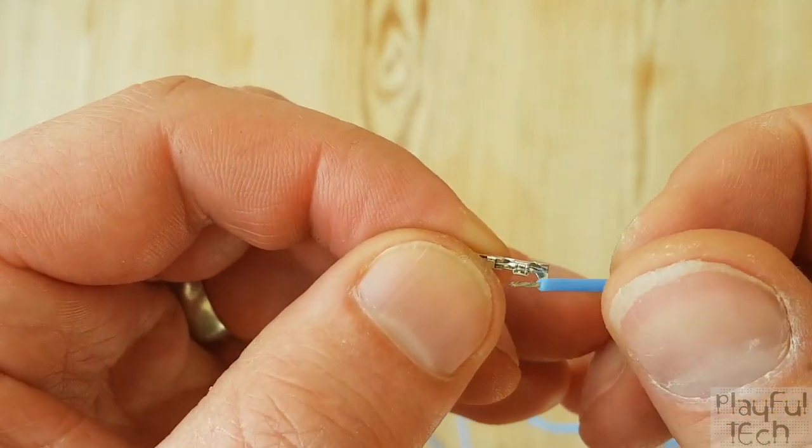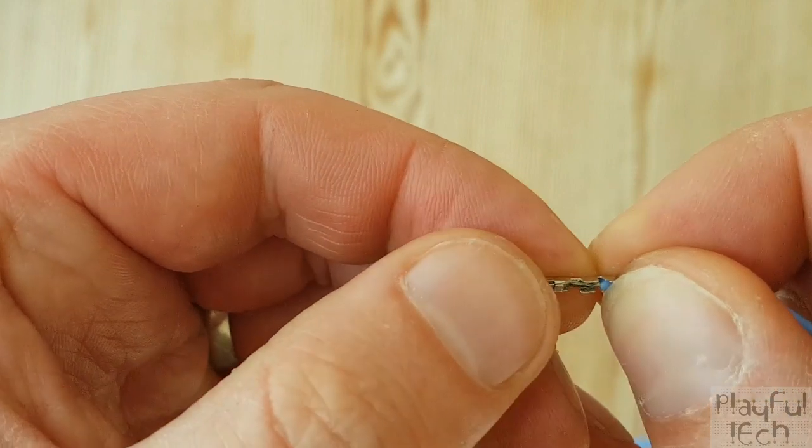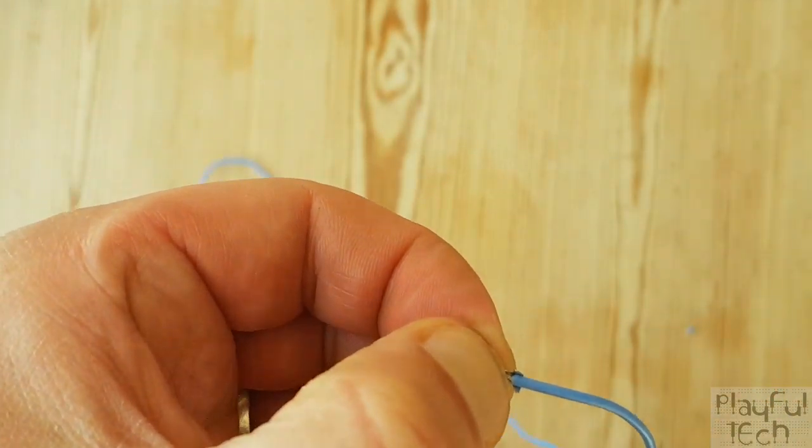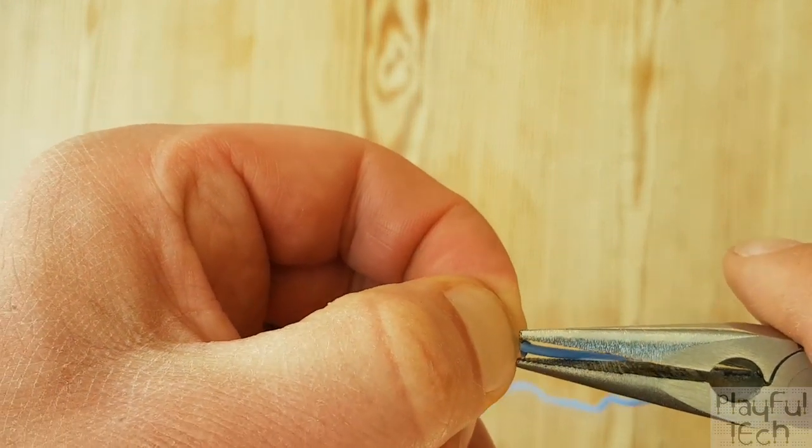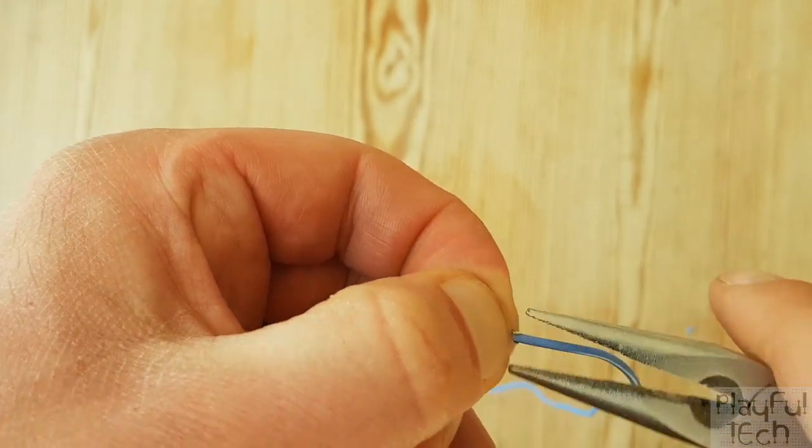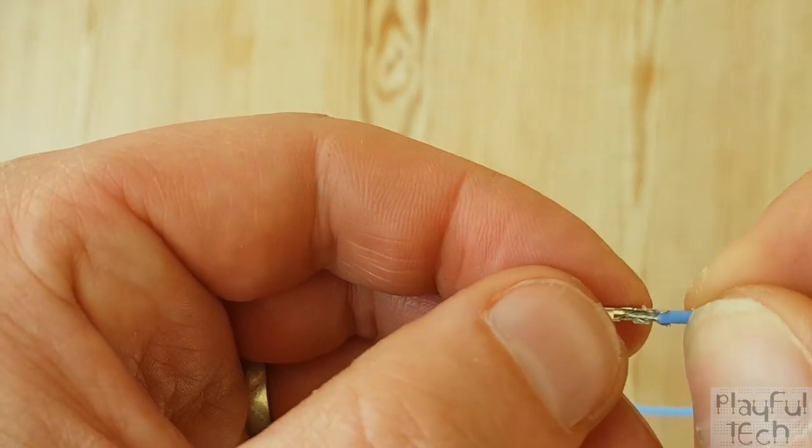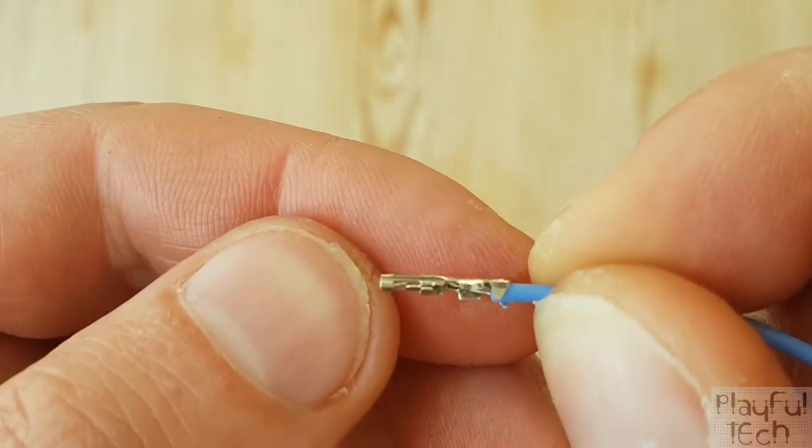So you see I've got a good contact there with the bare metal into the middle section, and then I'm just going to take my pliers again and just gently push those clips together onto the outside of the cable just to hold that in place. Not a total close connection. There we go, that's about where you want it to be lined up. Get a good look at that.